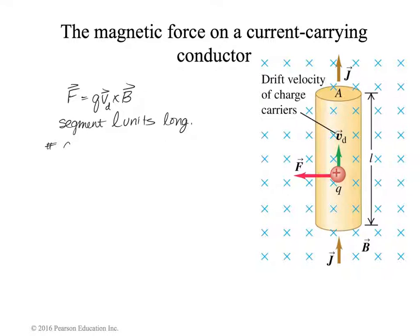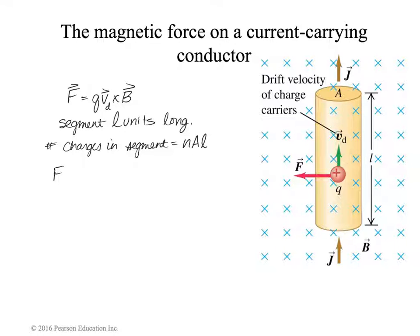The number of charges in that segment would be equal to the charge carrier density n — which we saw a little while back — times the volume of the piece of wire, found by taking the cross-sectional area times the length. So that's how many charges we have. The total force would then be equal to that number of charges times the charge on an individual charge carrier.